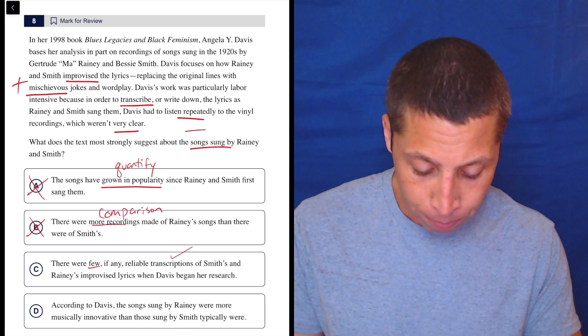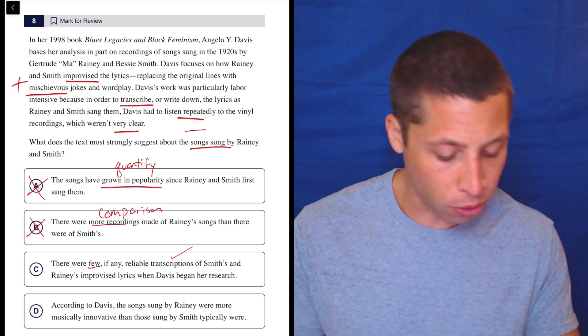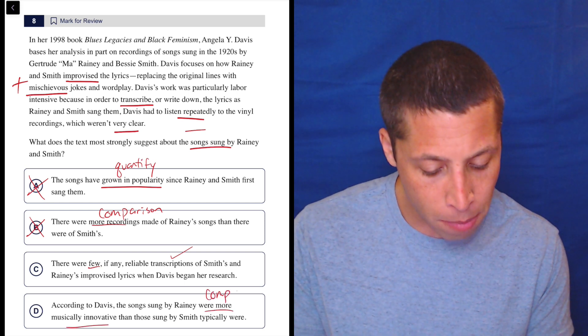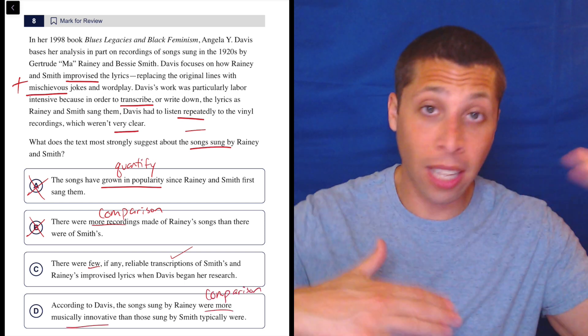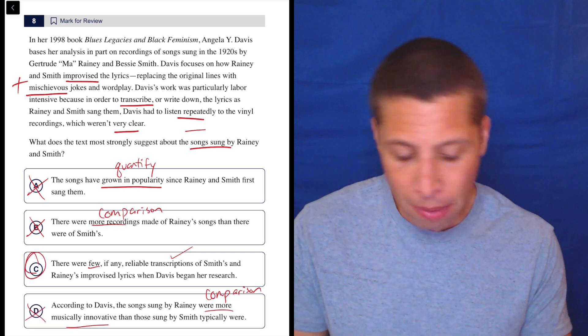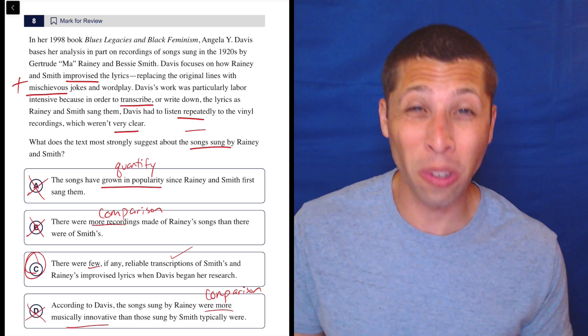Let's look at D, see if we get anything better. According to Davis, the songs sung by Rainey were more musically innovative than those sung by Smith typically were. Again, this is a comparison just like B trying to set these two people against each other. That is not the purpose of this passage. So maybe if I'm a little skeptical of C, it's all washed away by the fact that all the other choices are much worse.